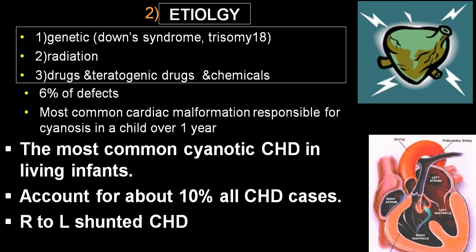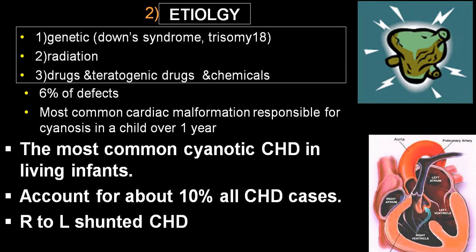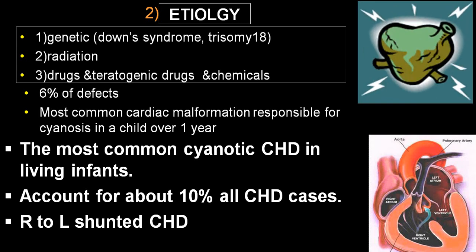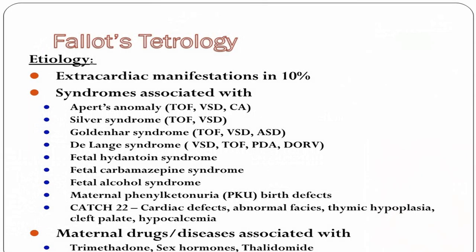TOF produces a right-to-left shunt, which causes deoxygenated blood to enter the oxygenated side, producing cyanosis. Extra-cardiac manifestations occur in ten percent of people, and the condition may be associated with Ebstein anomaly, Silver syndrome, Goldenhar syndrome, de Lange syndrome, fetal hydantoin syndrome, carbamazepine syndrome, fetal alcohol syndrome, and others. It may also be associated with VHD, ASD (pentology), PDA, or double outlet right ventricle due to drug toxicity or teratogenicity.